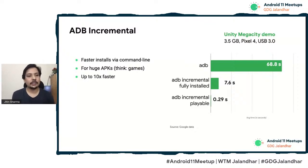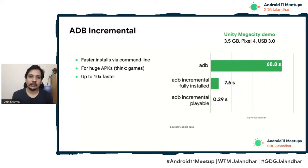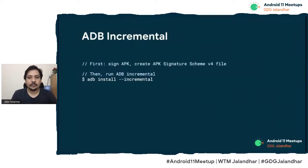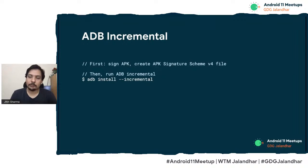ADB has an incremental mode. If you have a huge APK — especially for games where APK sizes can be hundreds of MBs or even GBs — incremental allows much faster installs. A graph shows that without ADB incremental an APK required 68 seconds, but with incremental it took only 7 seconds — a huge difference. To use this, just run adb install with the --incremental flag. Even for regular apps with large debug APKs, like over 100 MB, this can save meaningful build-and-push time.